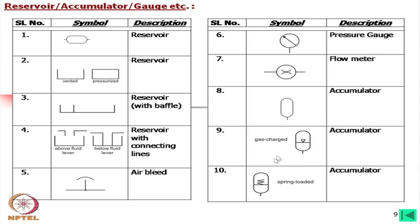Do not confuse this with a pump — this is a pressure gauge, shown by a needle inside a circle. If you draw a straight line with a symbol it is a flow control, but two lines inside a circle represent a flow meter.